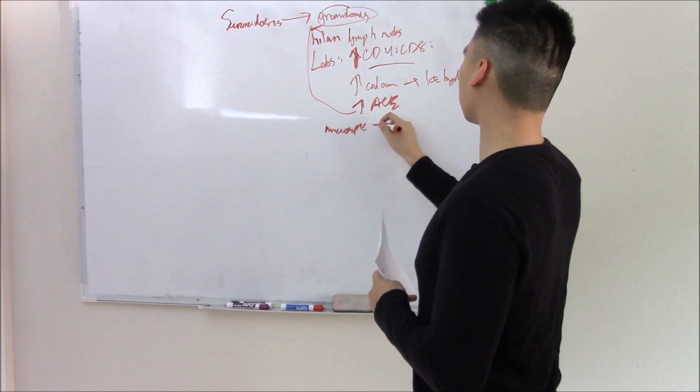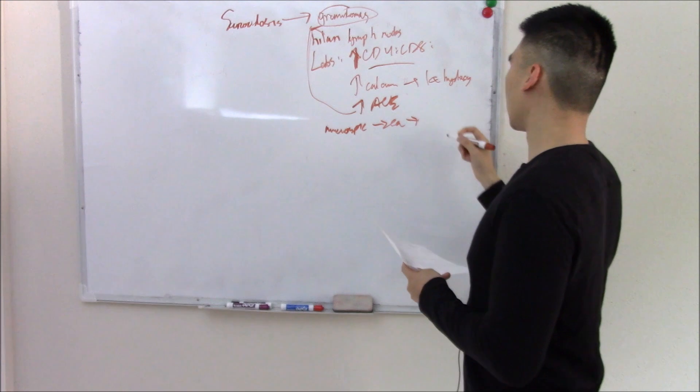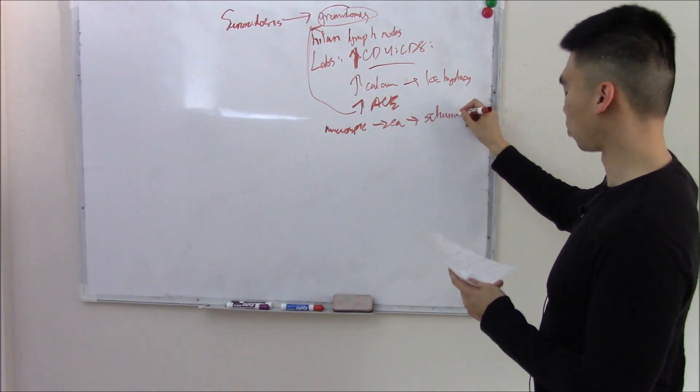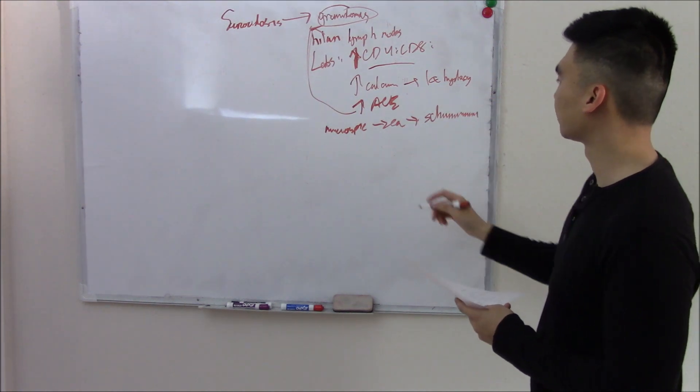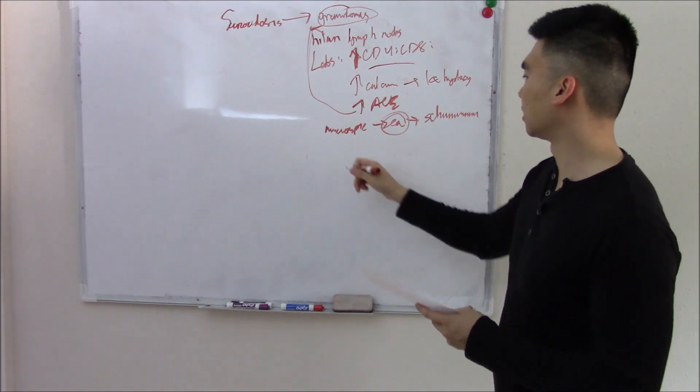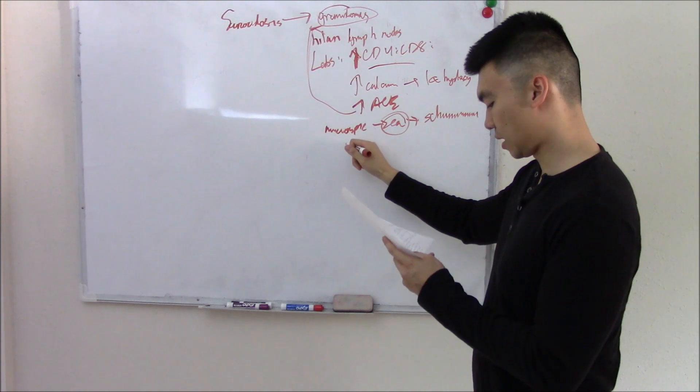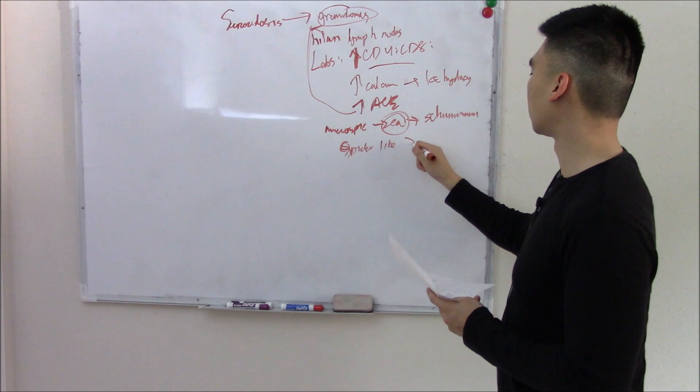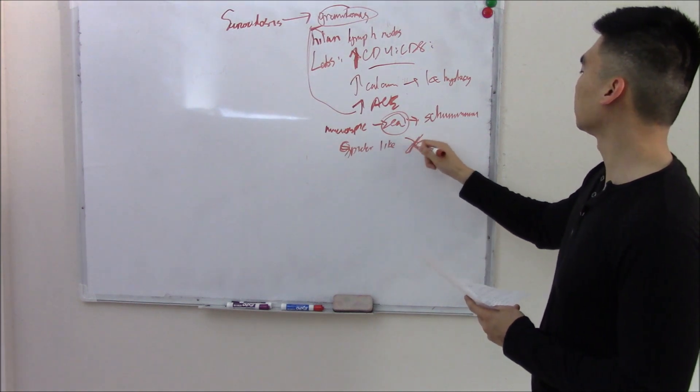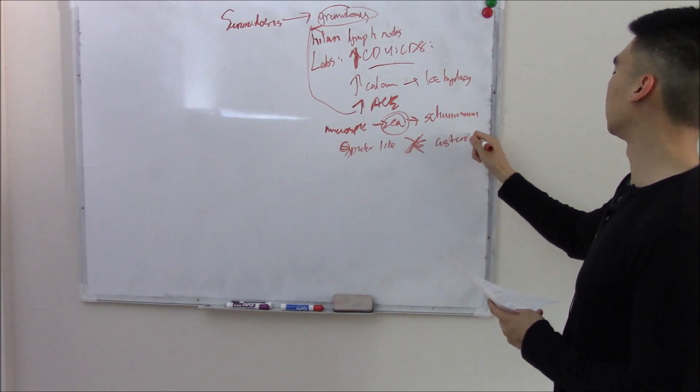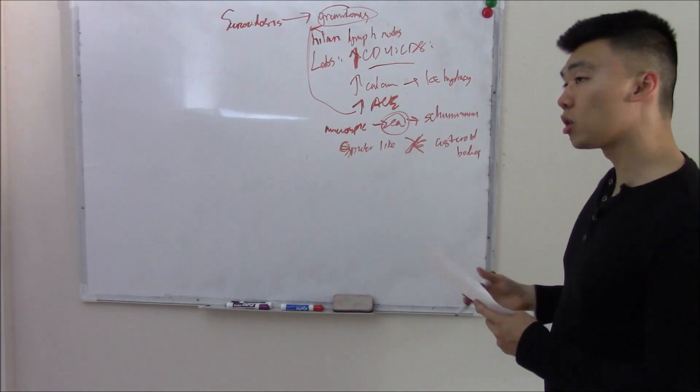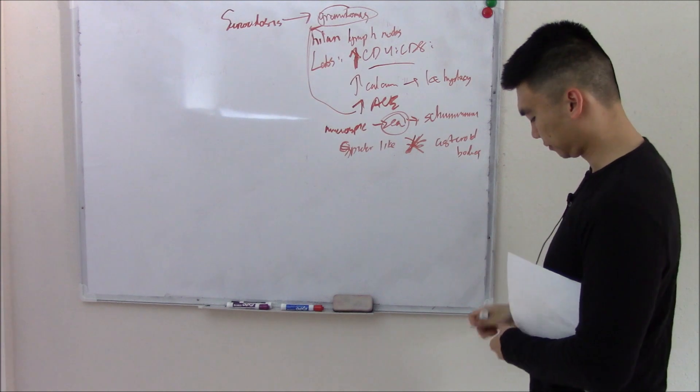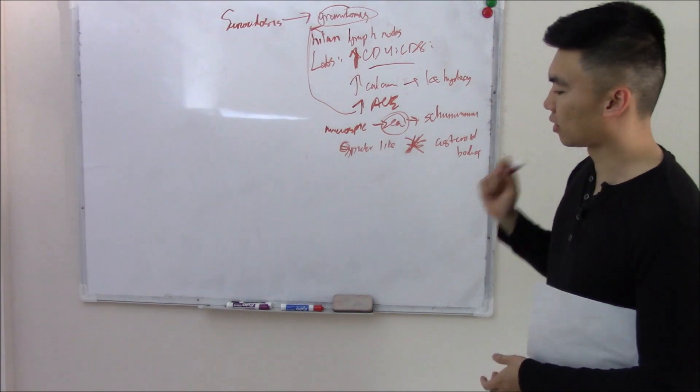Microscopically, you'll be able to see that calcium. And calcium stains blue. We call those Schaumann bodies. Calcium stains blue. That's a general fact you should remember. And you also see these spider-like projections called asteroid bodies. Nobody actually knows what they are, but if you see these spider-like projections, you're thinking sarcoidosis.